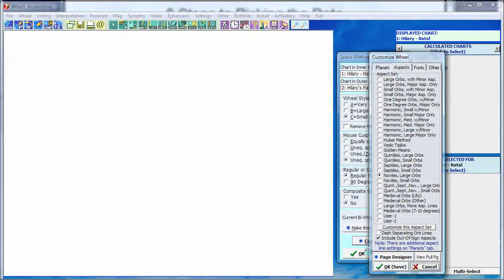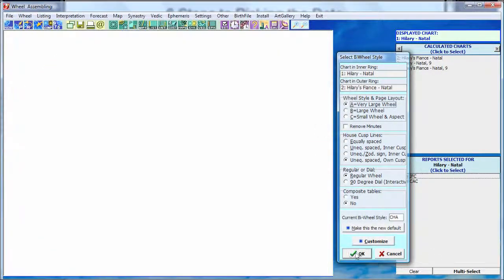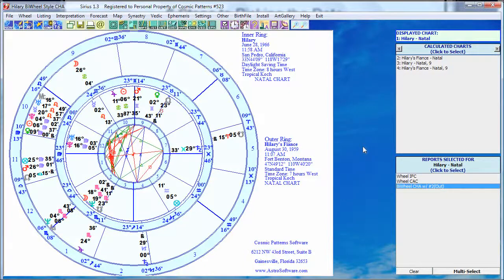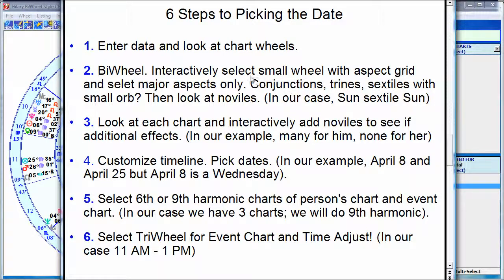Now I'm going to cancel out of all this and select a normal bi-wheel. So I've selected the bi-wheel and finished our step two. We interactively selected that bi-wheel, looked at the aspect grid, selected major aspects only, and found the special aspect — in our case, sun sextile sun. We also looked at the noviles and found that as well. Step two is done.